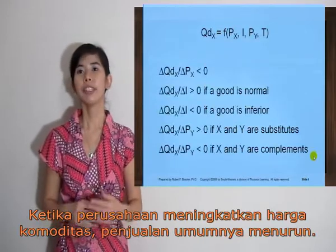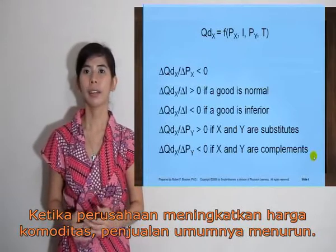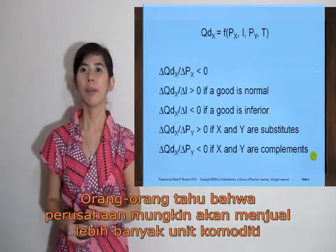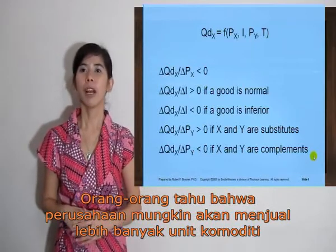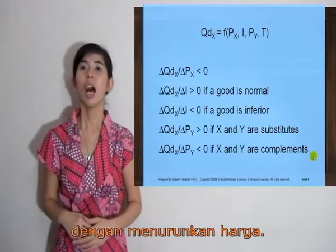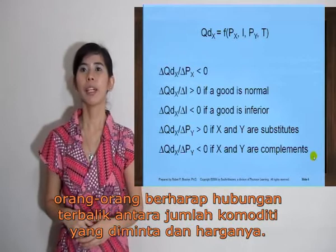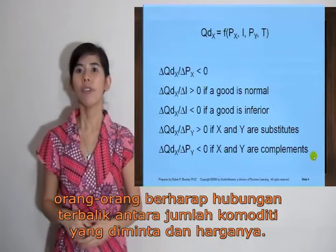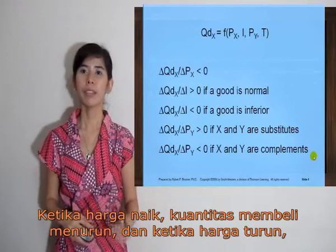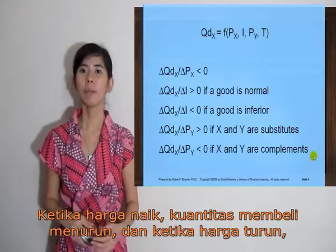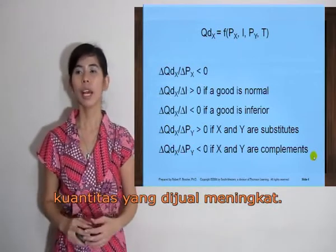When the price of a commodity increases, sales generally decline. People know that the price would probably sell more units of a commodity by lowering the price. Thus, people expect an inverse relationship between the quantity demanded of a commodity and its price. When the price rises, the quantity demanded declines, and when the price falls, the quantity sold decreases.